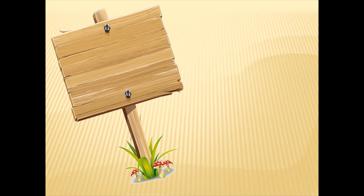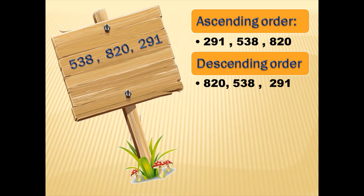Our next set of numbers are 538, 820, and 291. Now children, remember — look at the digit in the hundreds place and you can immediately make out which number is the smallest. So in ascending order we have 291 first, the next number is 538, and then we have 820. In descending order, we write the biggest number first, so that is 820, then 538, and then the smallest number 291.